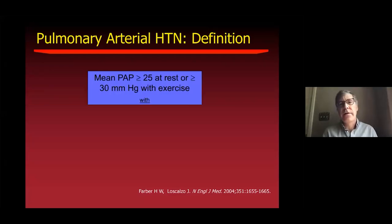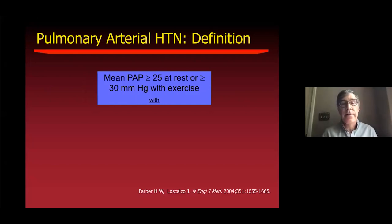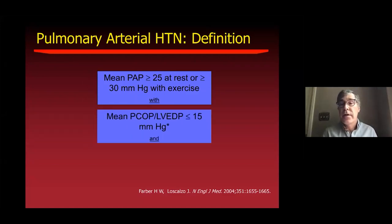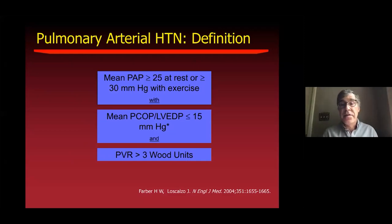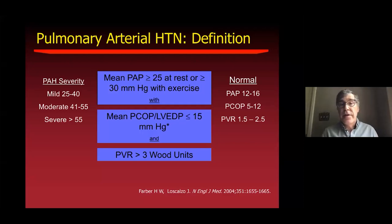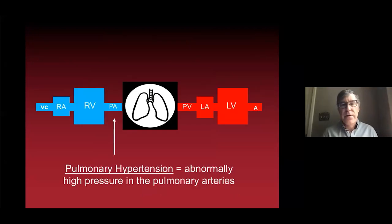Pulmonary arterial hypertension is defined clinically, usually by right heart catheterization, which remains the gold standard. Main pulmonary artery pressure greater than 25 at rest or 30 mmHg with exercise. Capillary occlusion pressure and left ventricular end-diastolic pressure should be less than 15, though this may still be elevated in some cases. Pulmonary vascular resistance greater than three Wood units. Severity grading: 25–40 is mild, 41–55 moderate, over 55 severe.